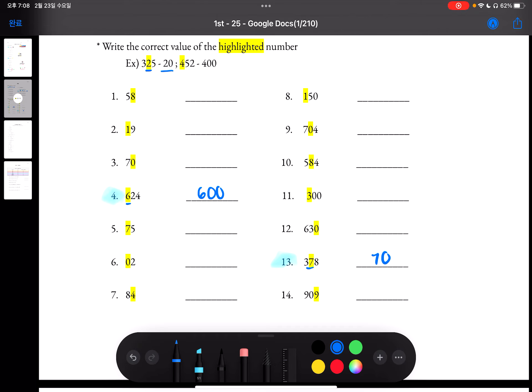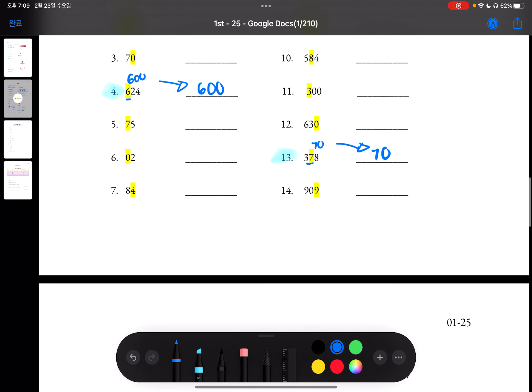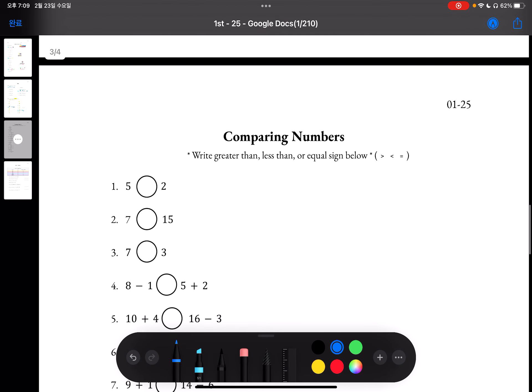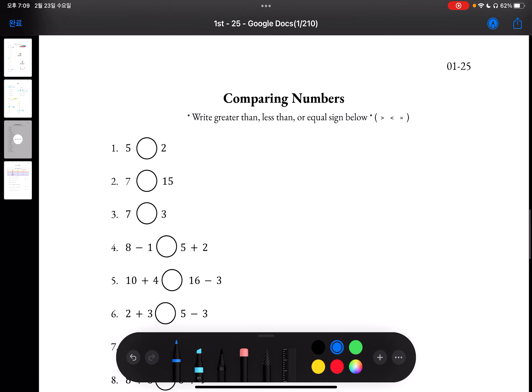Except for the highlighted value, you can just think that it's all 0 except for that. So it would be 600. And for this one, 70.